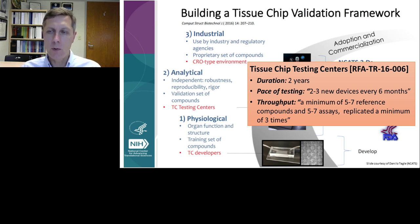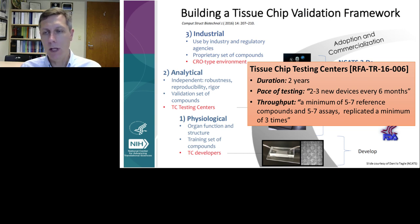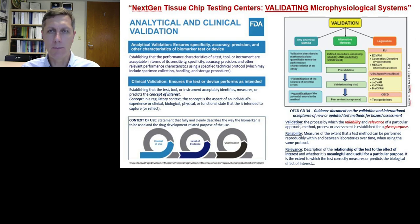NCATS issued a program announcement in 2016 with a call for proposals lasting about two years, which would test two to three new devices about every six months with a throughput of a couple of compounds tested for a couple of different phenotypes. Two and a half years ago, nobody knew whether tissue chip testing of this kind was even possible.